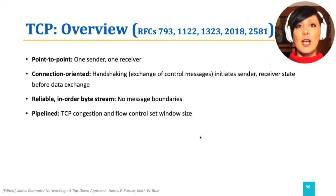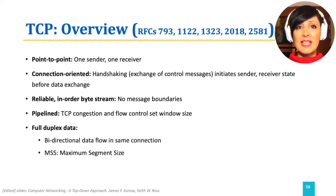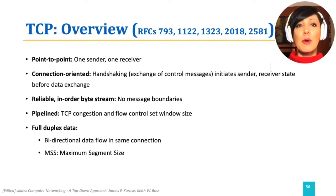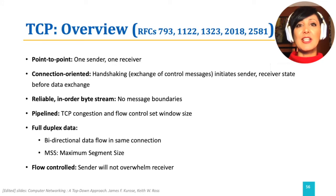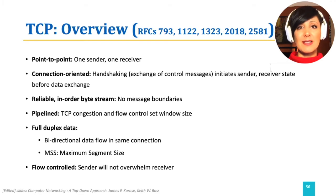TCP supports full-duplex data delivery with maximum segment size, or MSS, determined by the link layer maximum transmission unit, or MTU, which is 1,500 bytes normally, with the exception of jumbo frames. It is flow controlled, meaning that the sender will not overwhelm the receiver. That is TCP in fast bullets.